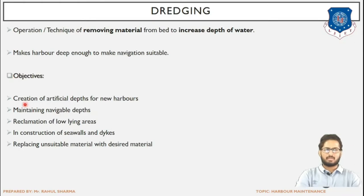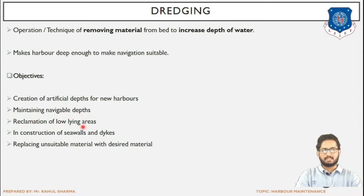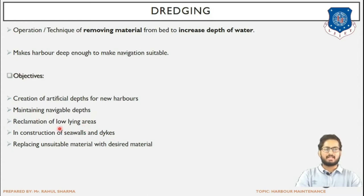Next are the various objectives of dredging. First is the creation of an artificial area for a new harbour — wherever we want to create a new harbour, rocks or sediments already deposited must be removed first from that location. Through dredging we can remove those excessive sediments and rocks and attain a navigable depth. Maintaining navigable depth has already been discussed. Reclamation of low-lying areas means that the material obtained through dredging can be used to increase the level or fertility of a barren land.